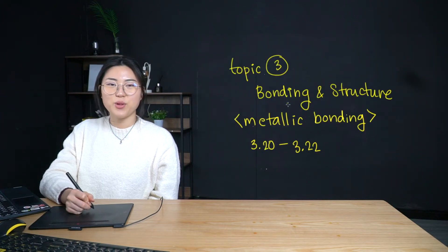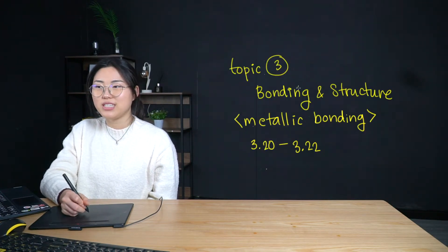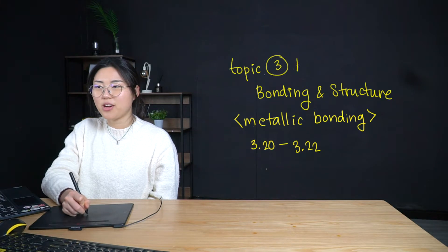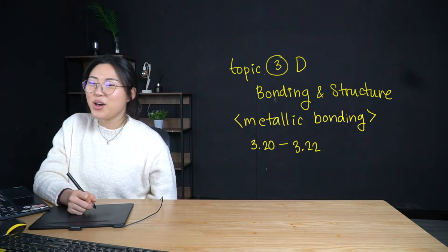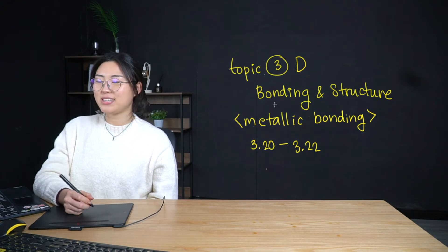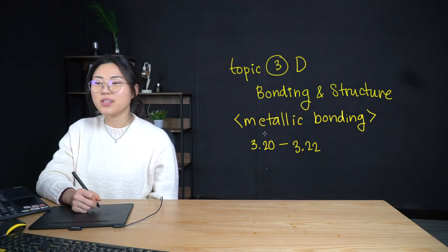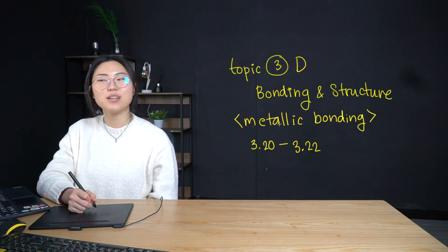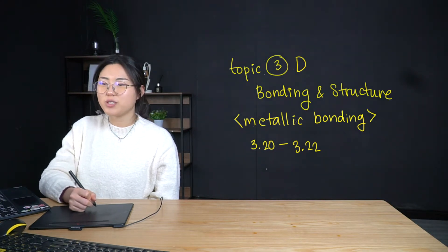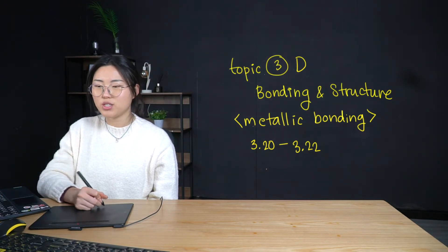In this session, I will be discussing topic 3, part D. We're going to be discussing bonding and structure again, but metallic bonding. It's the last little bit of topic 3, and it's going to be a shorter one. I'll be discussing the syllabus points 3.20 to 3.22.